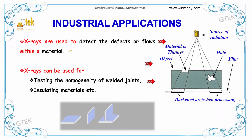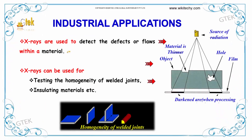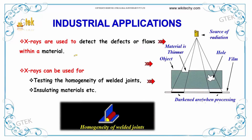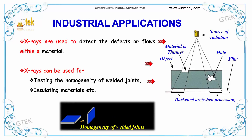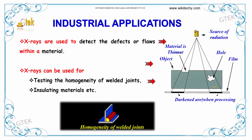Talking about the industrial applications, X-rays are used to detect the defects or flaws within a material. X-rays can be used for testing the homogeneity of welded joints and insulating materials.